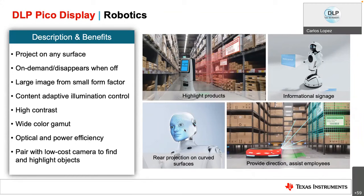The third example application is robotics. Projecting on any surface is important here, along with on-demand display, large image from a small form factor, high contrast, and wide color gamut. It pairs with a low-cost camera to find and highlight objects. This can significantly improve productivity in warehouses and factories. With the 0.16's extremely small form factor, you can embed a compact projection unit into a robot whether it's projecting from low to the ground or projecting onto shelves from higher up.